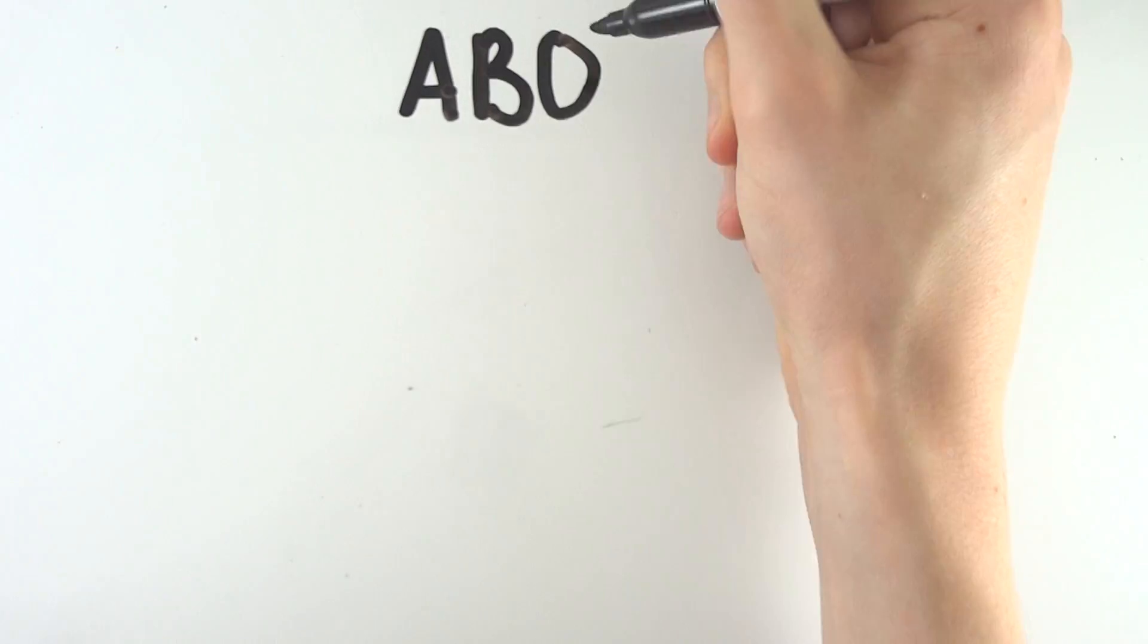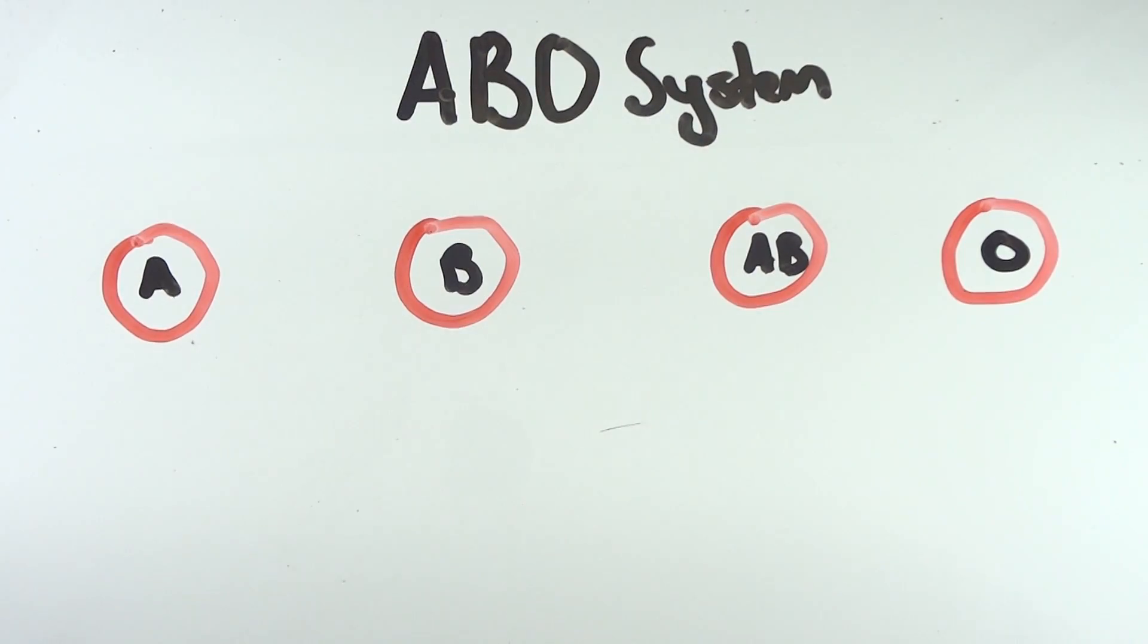The ABO system is the blood group which most people are familiar with. This puts you into one of four groups: A, B, AB or O.